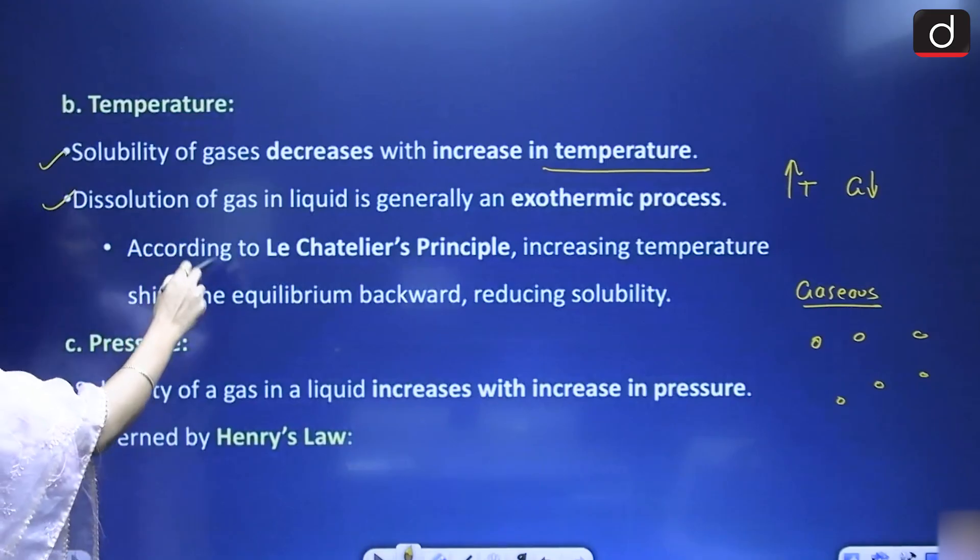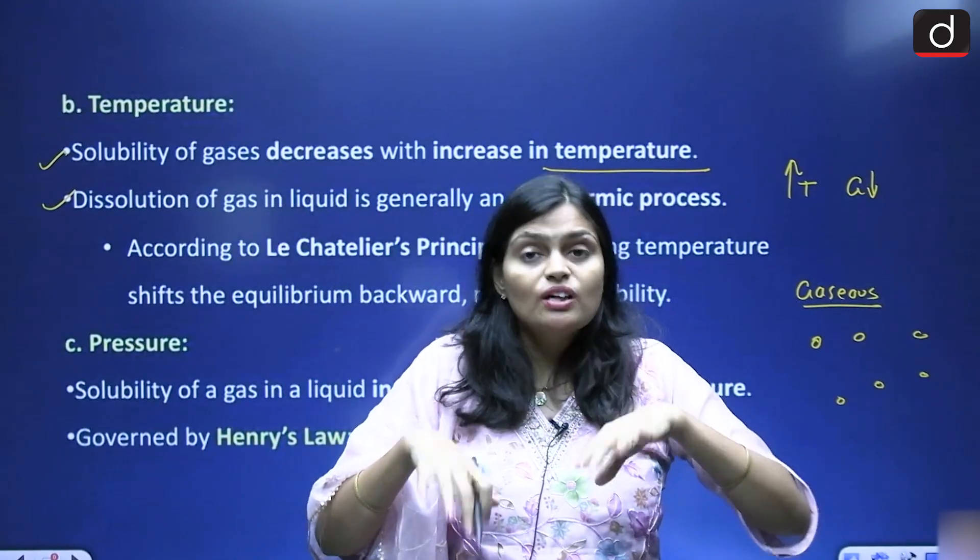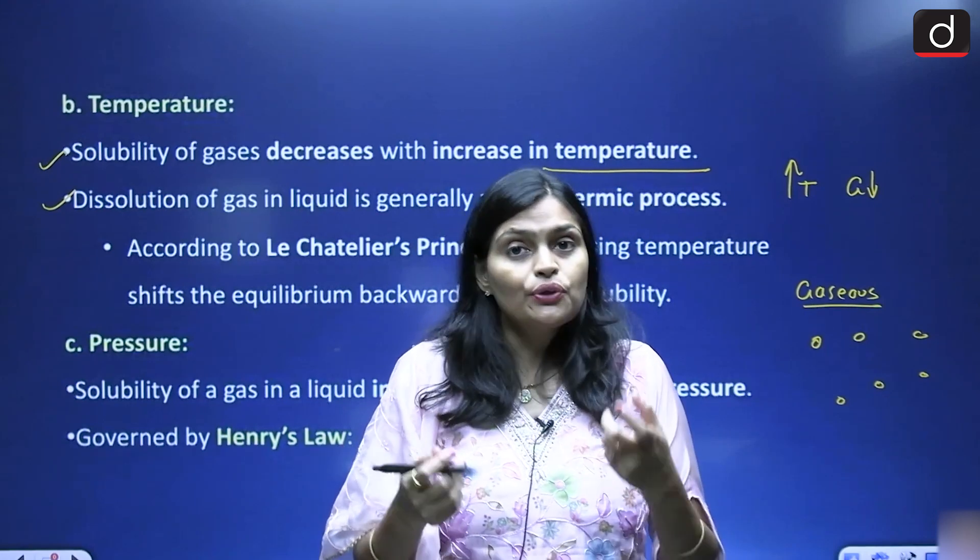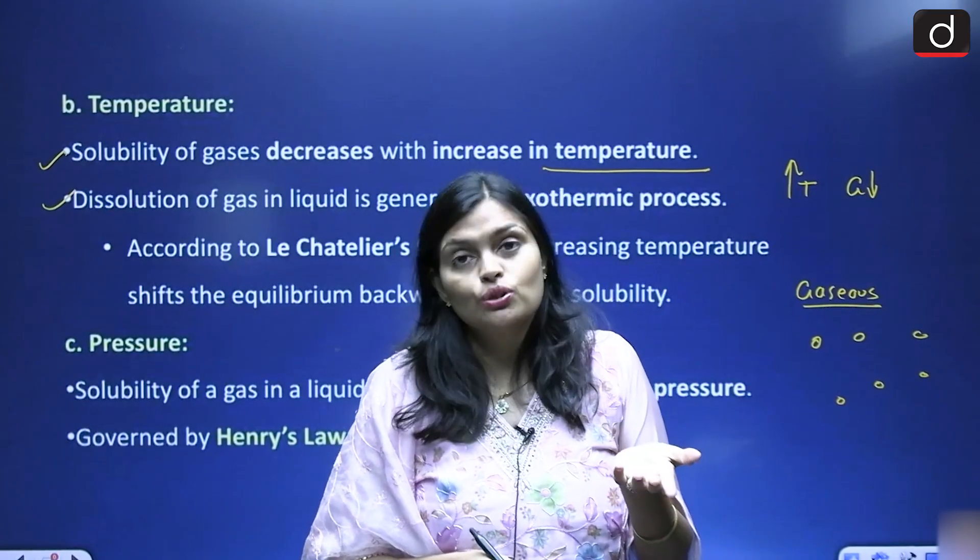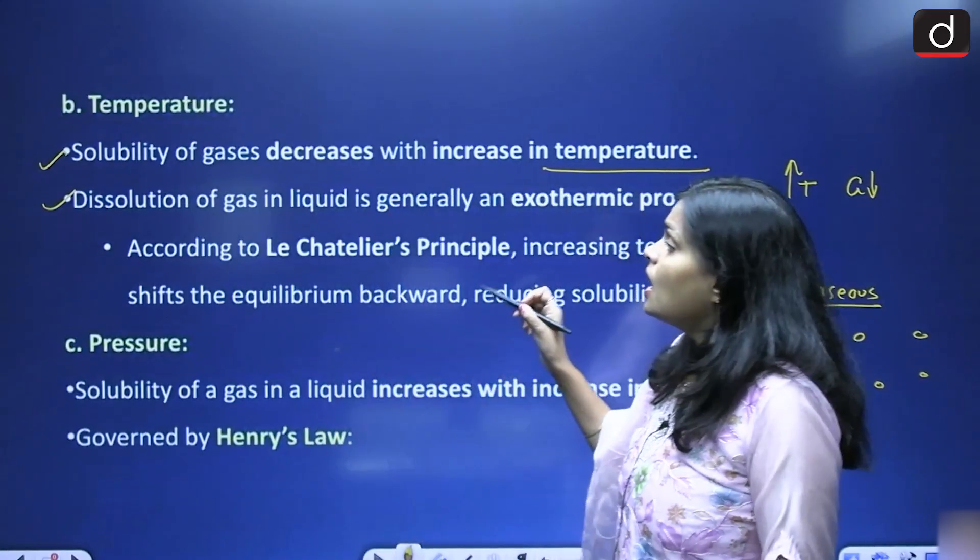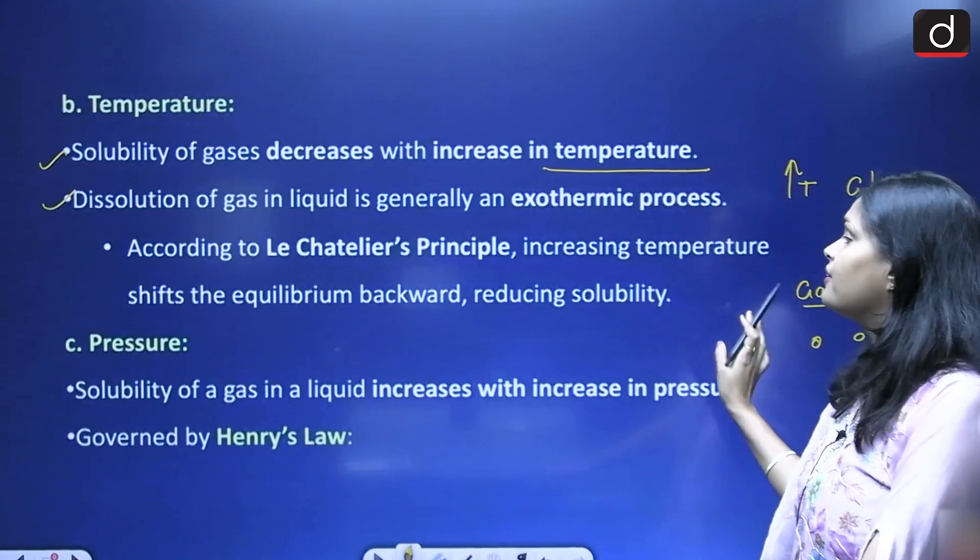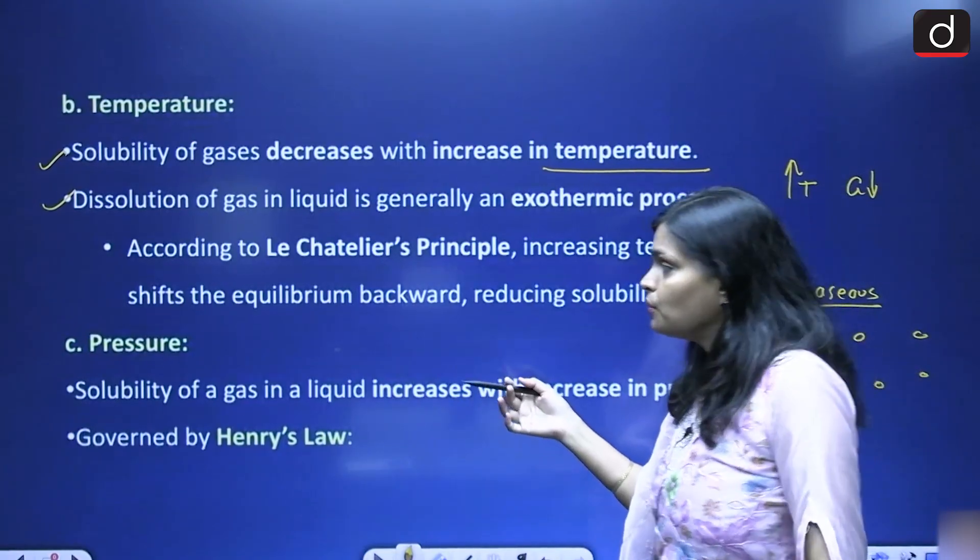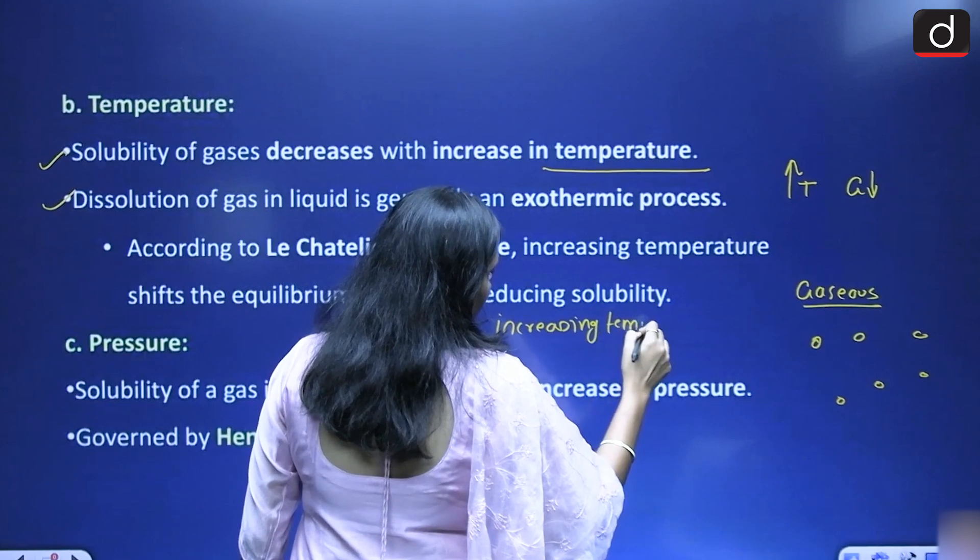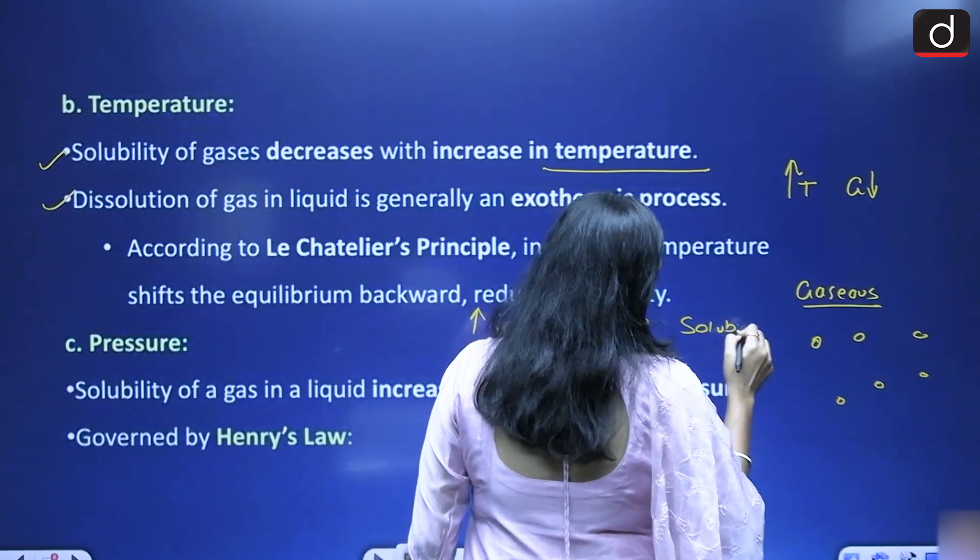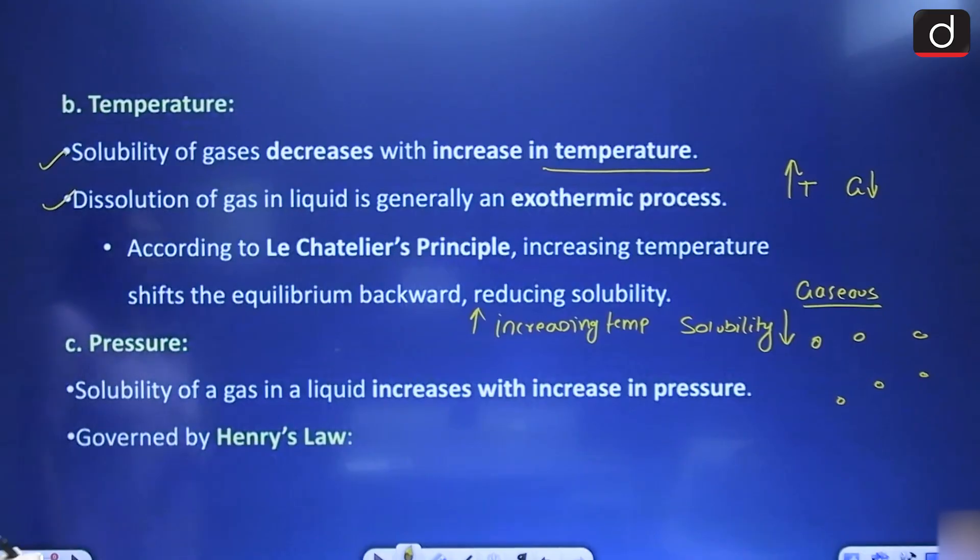Dissolution of gas in liquid is generally an exothermic process. Exothermic means heat releases. So whenever you are mixing gas in water, at that time some amount of heat also releases. According to Le Chatelier's principle, increasing temperature shifts the equilibrium backward reducing solubility. According to Le Chatelier's principle, what happened? On increasing temperature, the solubility decreases.